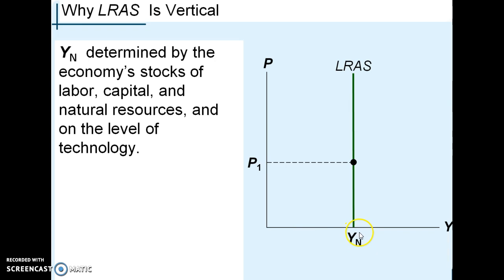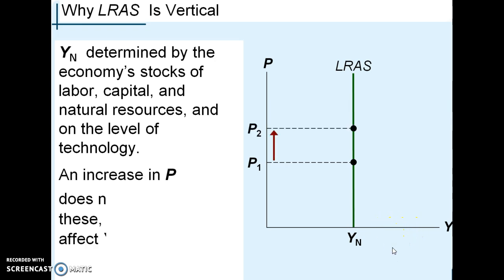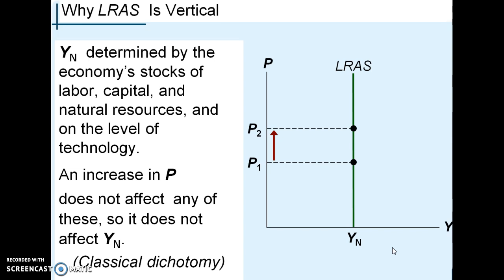As time progresses and productivity increases, this curve should continue to shift out to the right. Price levels can fall or rise with no change in real output, and that's consistent with the classical dichotomy. The classical dichotomy is why the long-run aggregate supply curve is vertical.